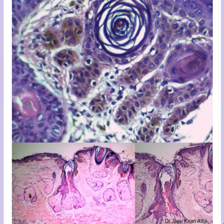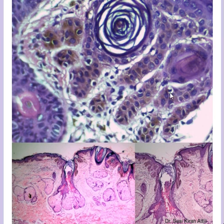You can see that these are elongated rete ridges, and you can appreciate the branching here. The number of melanocytes is actually the same - these are the melanocytes, which are the vacuolated cells in the basal layer. The melanocyte-to-keratinocyte ratio in the basal layer is usually 1 to 8.